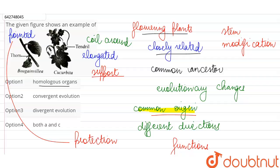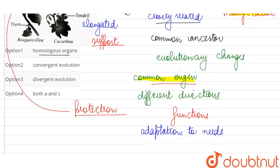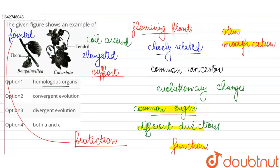And thorn is a stem modification for protection. But both of them, since they are formed by modification of the same morphological structure in the plant body, we are going to say they are having common origin but different functions, because they evolved along different directions so that the plants could adapt to their needs. So despite having common ancestor, despite having common origin.